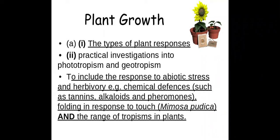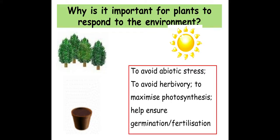Welcome biologists to this session where we're going to take a look at the types of plant responses and tropisms in plants. It's important for plants to respond to their environment to avoid abiotic stress. Abiotic factors are things like light, pH or nutrients — anything that's non-living. To avoid herbivory — importantly, use that term rather than predation, as plants aren't predated upon — plants also respond to maximise photosynthesis and to help ensure germination.